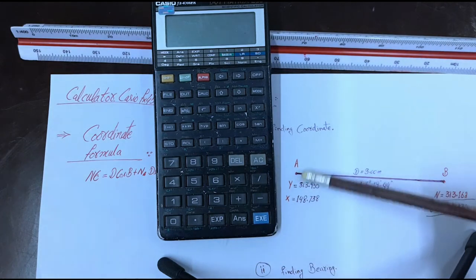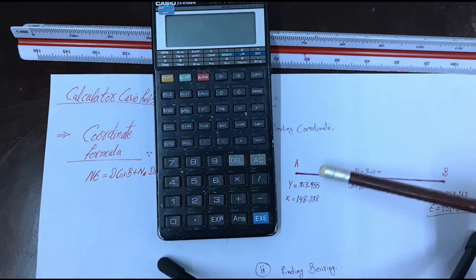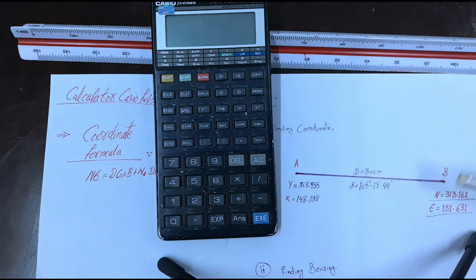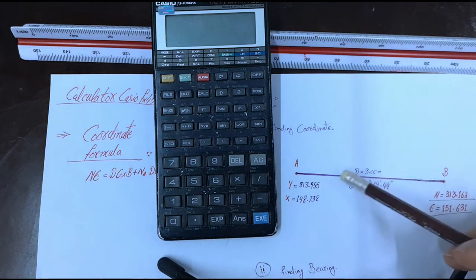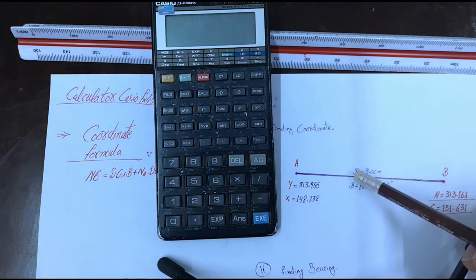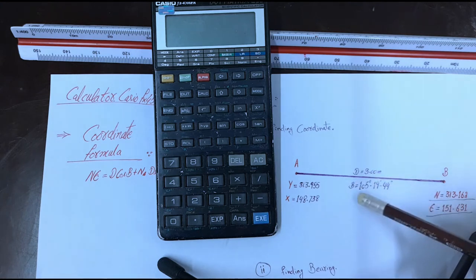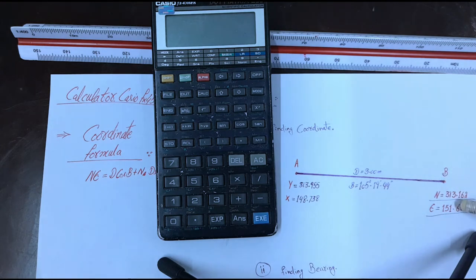I have this point A coordinate and point B. I need point B coordinate. So from point A to point B, I have the distance and this line bearing. So I need to find point B coordinate.